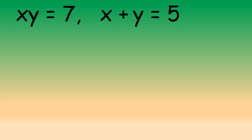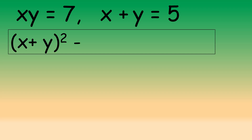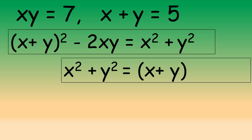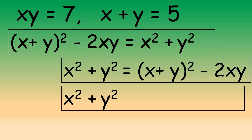We have xy equals 7 and x plus y equals 5. We previously established that x plus y all squared minus 2xy equals x squared plus y squared. So x squared plus y squared is simply x plus y all squared minus 2xy. In this equation we know what x plus y is — it is 5 — and we know that xy equals 7. Therefore we will substitute these values appropriately.